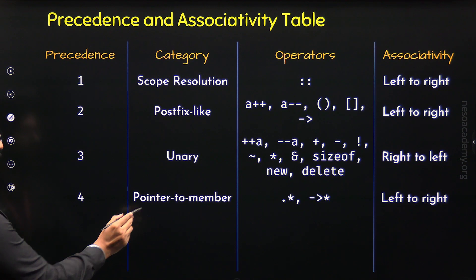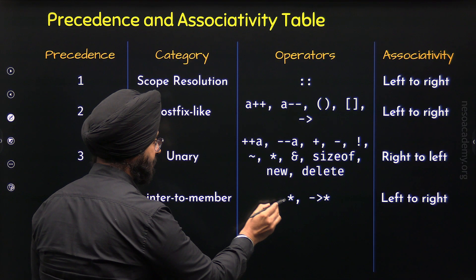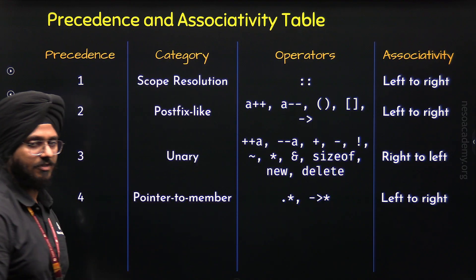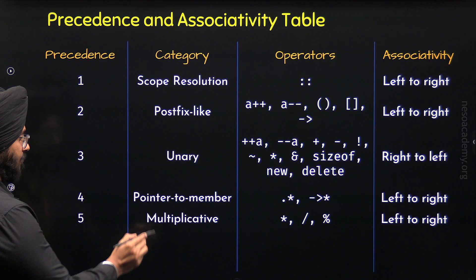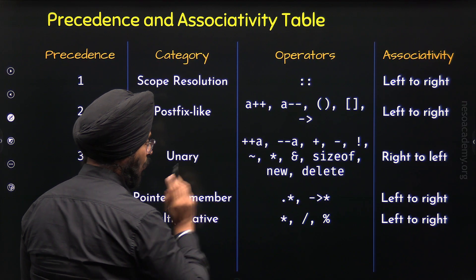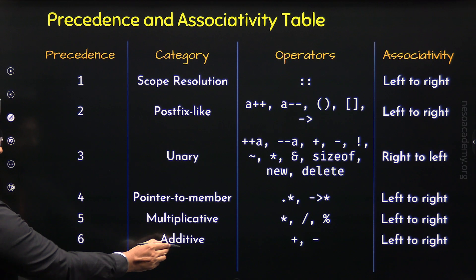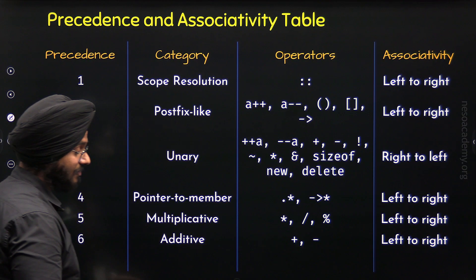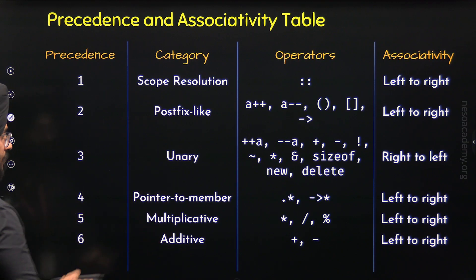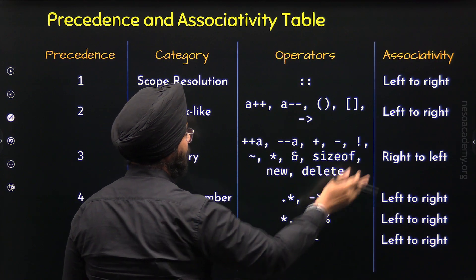The fourth category is pointer-to-member, with member object selector and member pointer selector operators, having left-to-right associativity. The fifth category is multiplicative, with multiplication, division, and mod operators — left-to-right associativity and precedence five. The sixth category is additive, with binary plus and binary minus — left-to-right associativity and precedence six. We can observe that unary operators have right-to-left associativity while the rest have left-to-right.